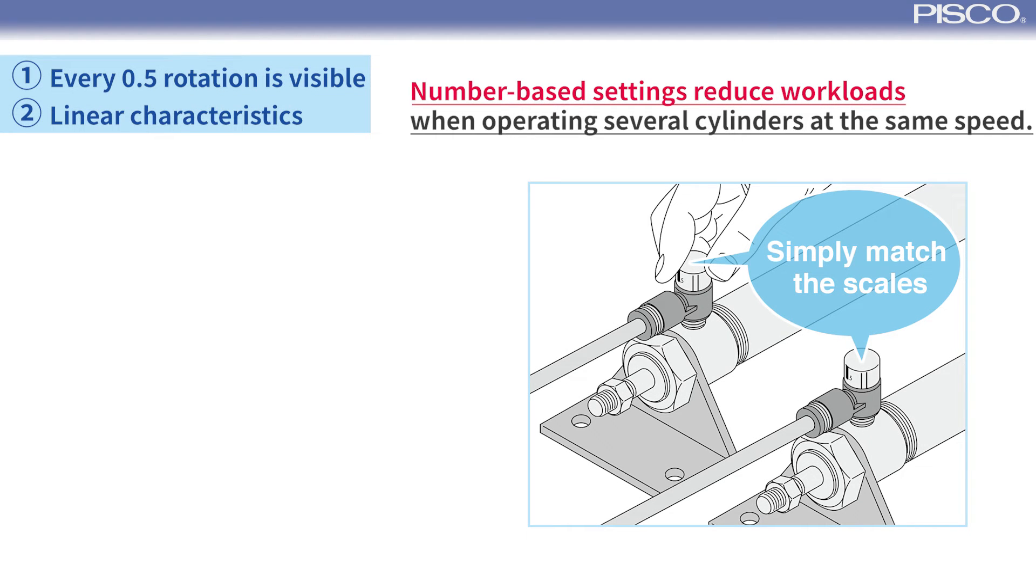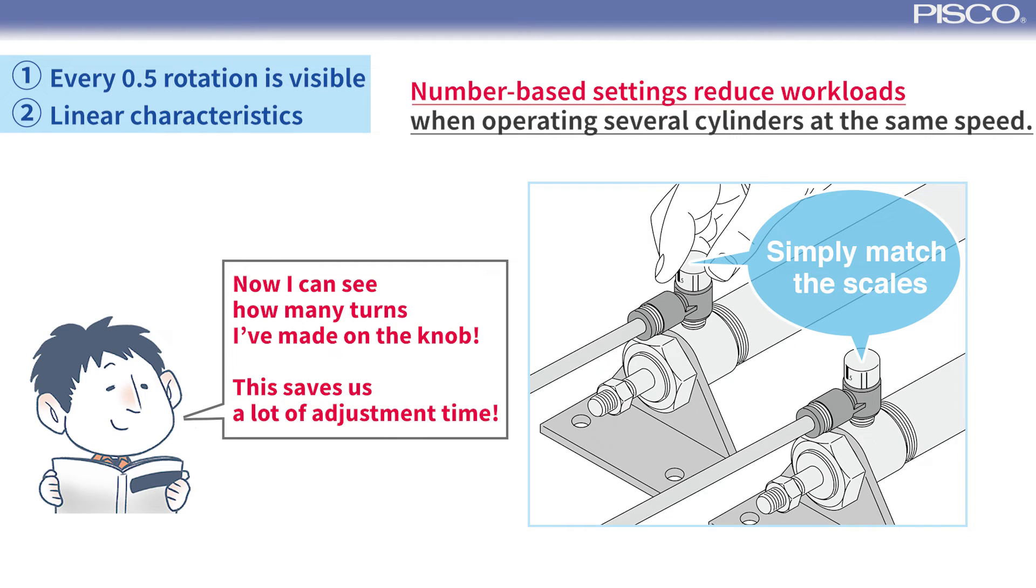If you need to adjust the speed of several cylinders for simultaneous operation, you can adjust it by simply fixing the knob in the same position which can be confirmed by the indicator. Now, I can see how many turns I've made on the knob. This saves us a lot of adjustment time.